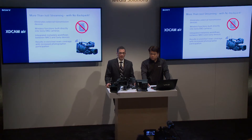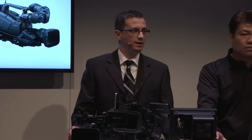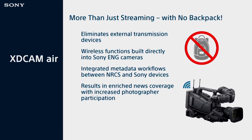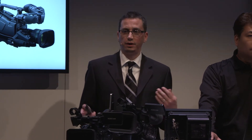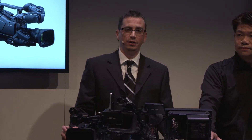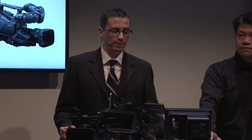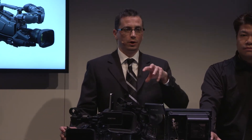Having the ability to have the encoding and transfer directly in the camcorder really eliminates the need for a third-party transmission device. This means you don't need an extra backpack, additional batteries, or the wires. We can now do dual-link streaming directly from the camcorder without any additional hardware. This is a big benefit. It also allows you to have more devices stream back to the station, because every photographer with a Sony camcorder has the ability to stream and transfer files back to the station — not just those equipped with a backpack.